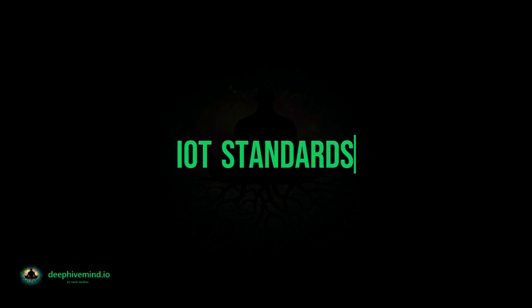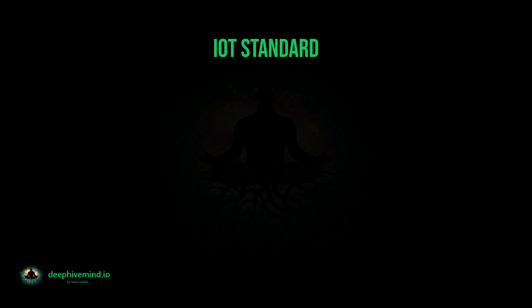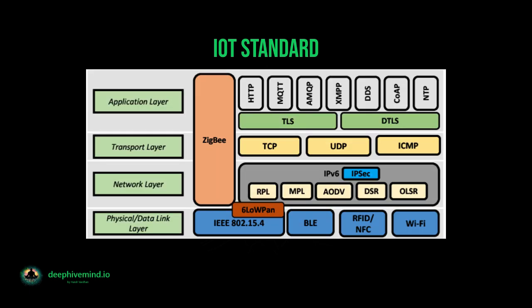IoT Standards: There are several emerging IoT standards. IPv6 over Low Power Wireless Personal Area Networks, 6LoWPAN, is an open standard defined by the Internet Engineering Task Force. The 6LoWPAN standard enables any low-power radio to communicate to the Internet, including 802.15.4, Bluetooth Low Energy (BLE), and Z-Wave for home automation.